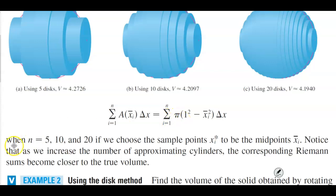Now again this is when n equals 5, 10, and 20, and if we choose the sample points x_i to be the midpoints. Notice that as we increase the number of approximating cylinders, the corresponding Riemann sum becomes closer to the true volume. Using 5 is 4.27, using 10 is 4.20, using 20 gives you 4.19.